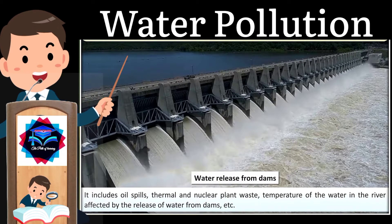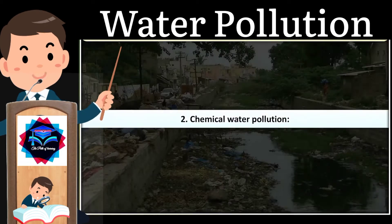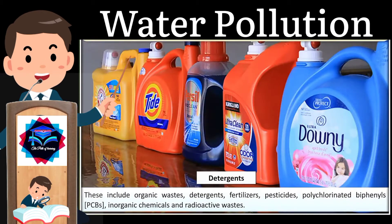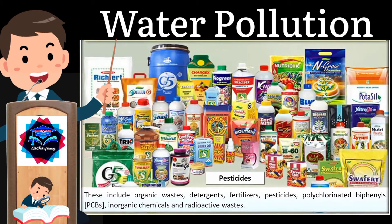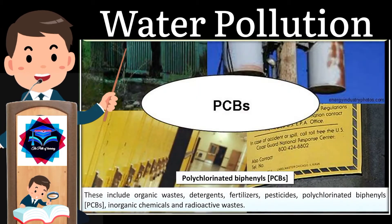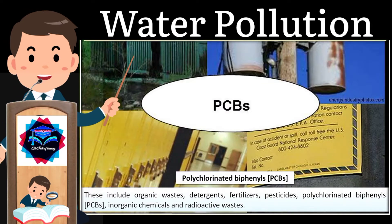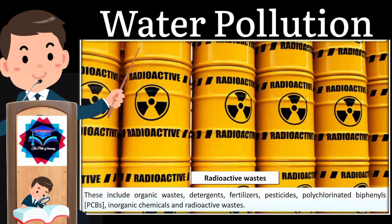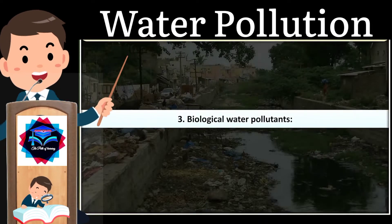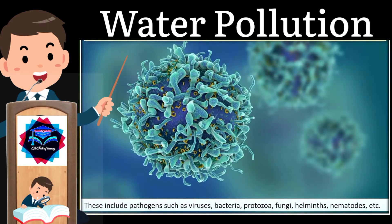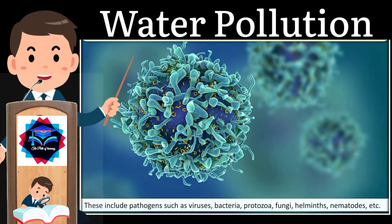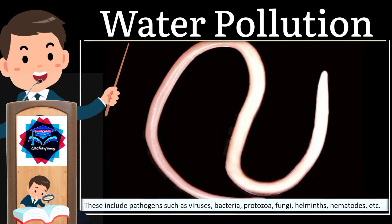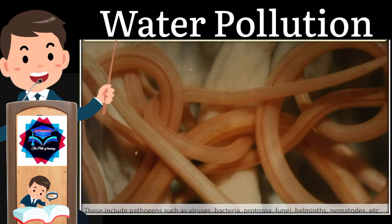Two, chemical water pollutants — these include organic wastes, detergents, fertilizers, pesticides, polychlorinated biphenyls (PCBs), inorganic chemicals, and radioactive wastes. Three, biological water pollutants — these include pathogens such as viruses, bacteria, protozoa, fungi, helminths, nematodes, etc.